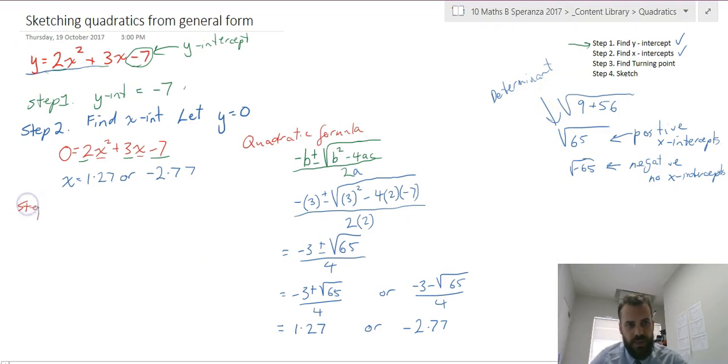Now let's do step 3. Step 3: find the turning point. There's a very simple turning point formula. The turning point formula is negative b on 2a. Make sure that you know that turning point formula. So let's sub in b. Negative, use your bracket still, negative 3, because it was positive 3, but we need negative b, over 2a, 2 times 2.